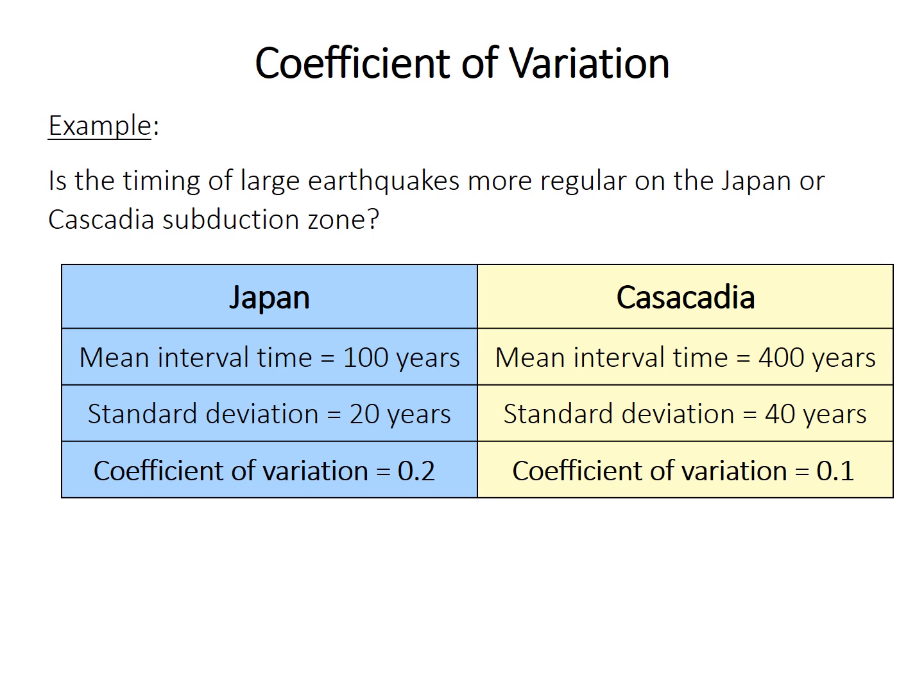More commonly, you want to use coefficient of variation when you are comparing things measured in different units. So for example, we want to know, is pH more variable than temperature? Or is temperature more variable than pH if we measure it in a bunch of different lakes? Those are measured in different units. Temperature is in degrees Celsius, pH is in pH units. And so therefore, it really wouldn't make sense to compare the actual raw standard deviations, which are measured in degrees Celsius or pH units. If we divide by the mean, we are dividing degrees Celsius by degrees Celsius, and so we get a non-dimensional measure of comparing variability.